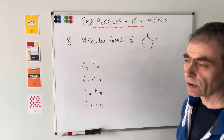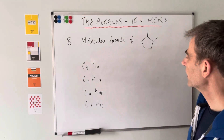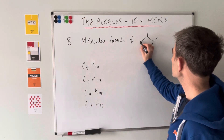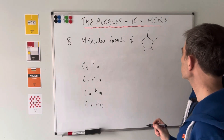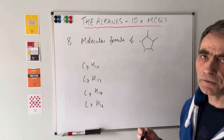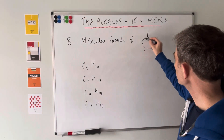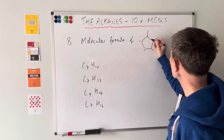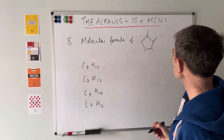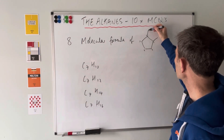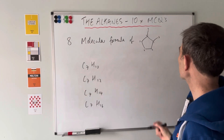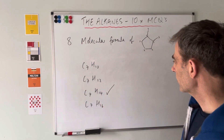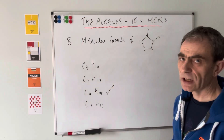Moving on to question eight: what's the molecular formula of this cyclic alkane? It has seven carbons. For the number of hydrogens: each carbon forms four bonds. The carbons forming two bonds to other carbons have two hydrogens each. The carbons forming three bonds to other carbons have one hydrogen each. The end carbon has three hydrogens. Counting up: three, six, seven, eight, nine, ten, eleven, twelve, thirteen, fourteen - so 14 hydrogens.